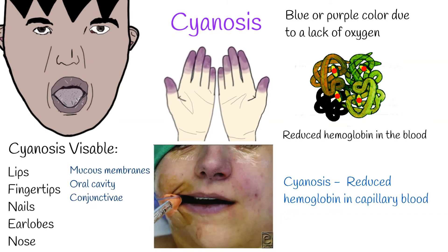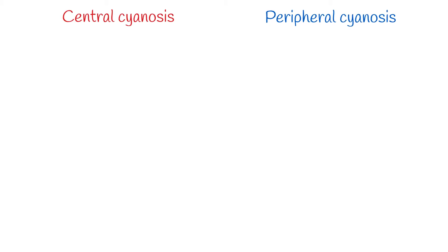Cyanosis becomes apparent when the concentration of reduced hemoglobin in capillary blood exceeds 40 grams per liter. There are two types of cyanosis: central cyanosis, which is caused by a lack of oxygen in the blood itself, and peripheral cyanosis, which is caused by poor circulation that leads to increased deoxygenated blood in the extremities.